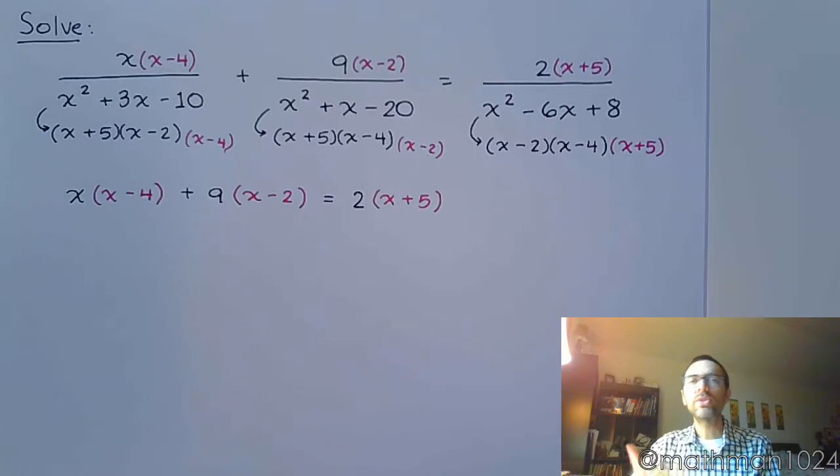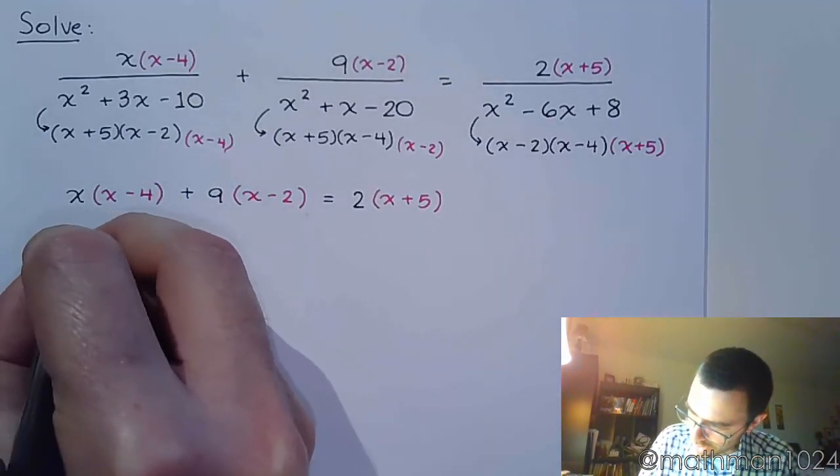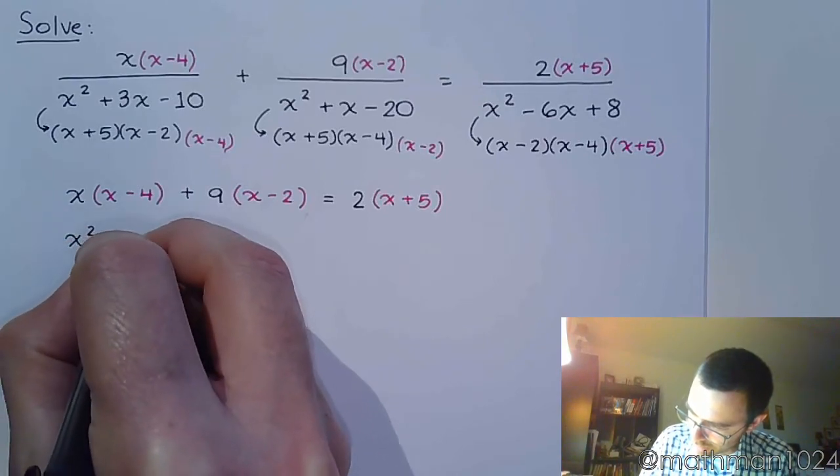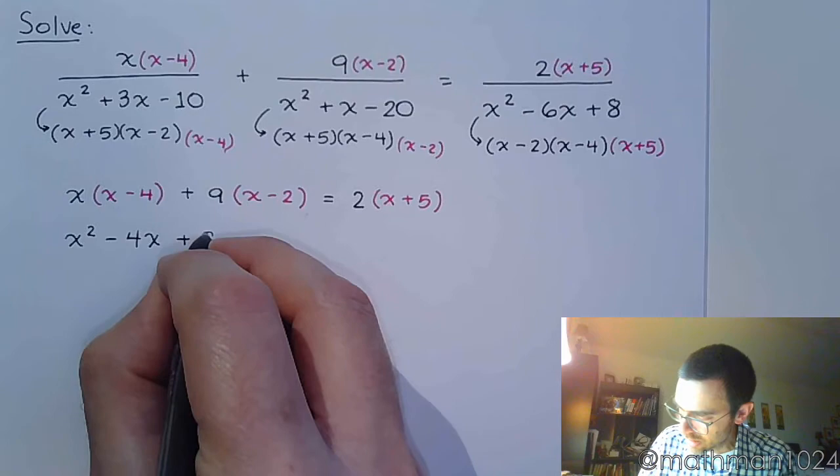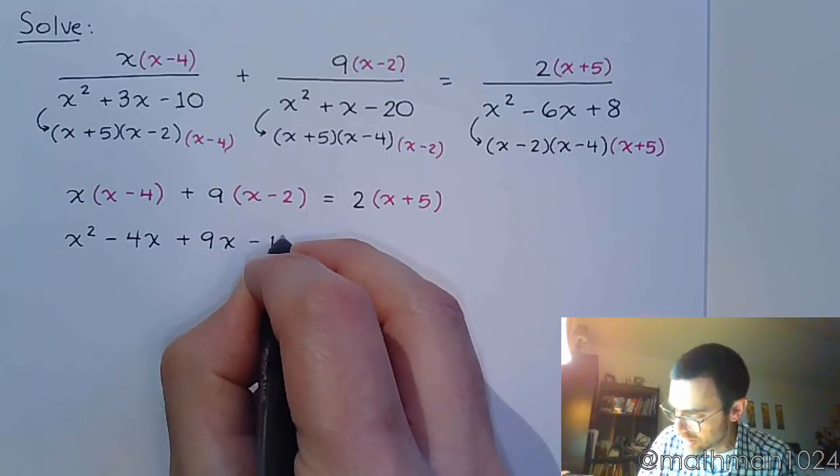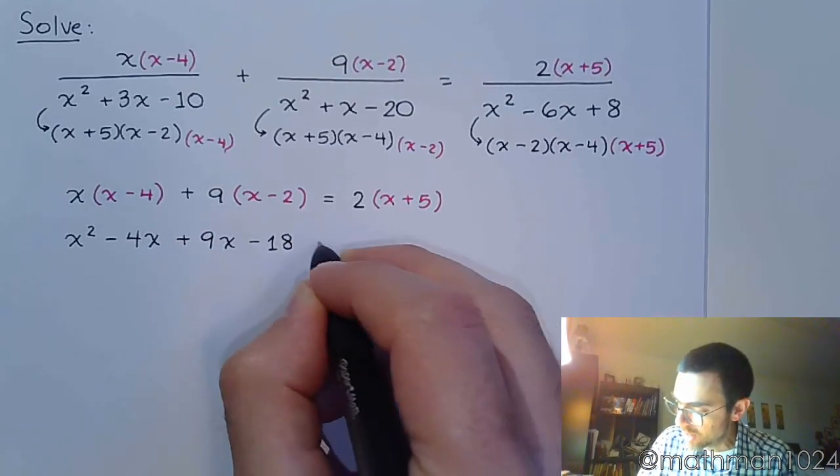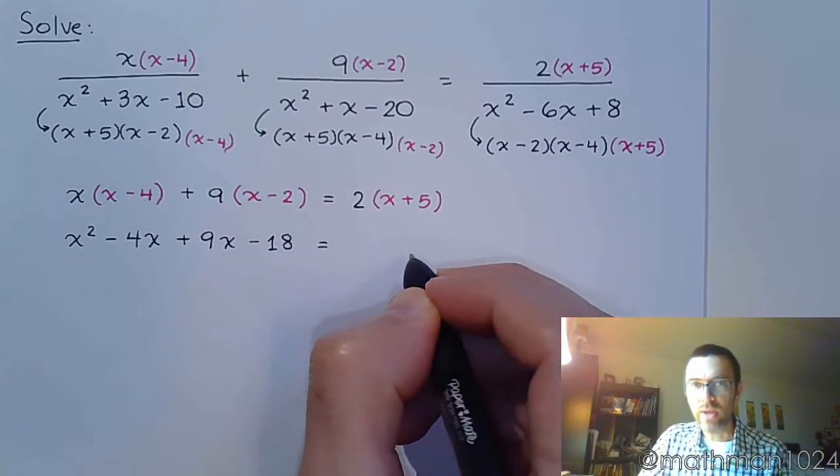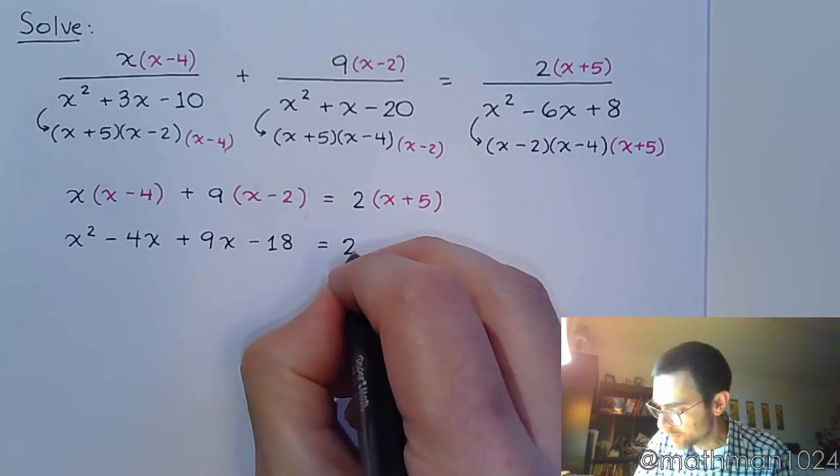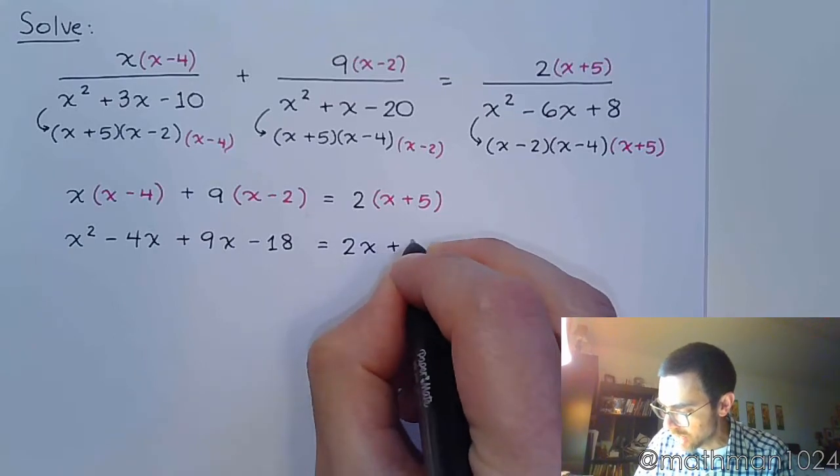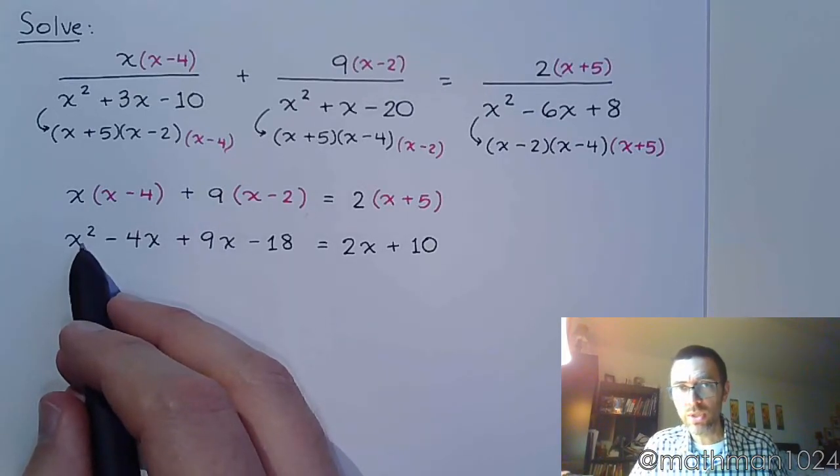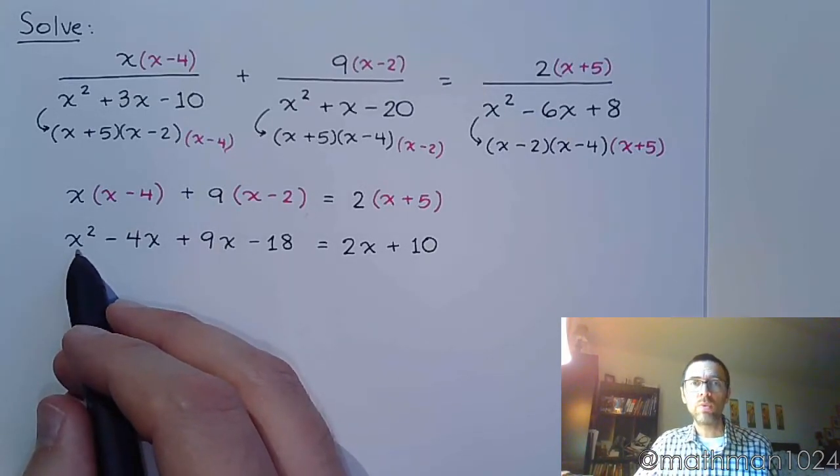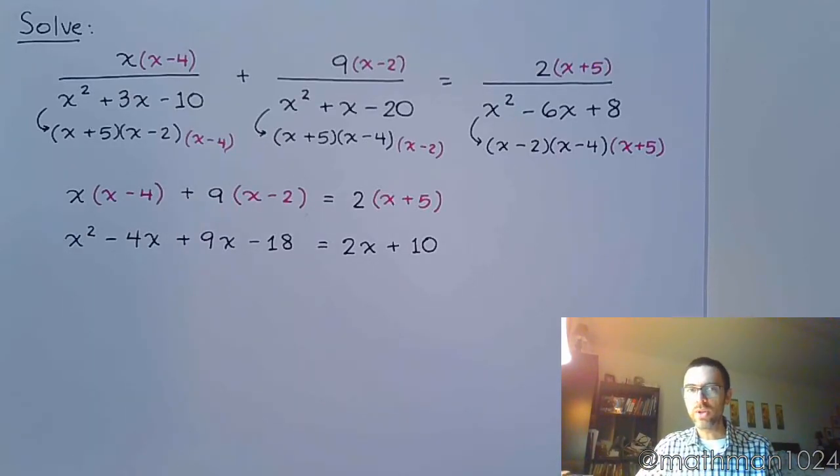And now we just distribute to see what we have. So to distribute here, we have x squared minus 4x, distribute to the 9. So plus 9x minus 18. And on the right side, distribute to the 2. And we have 2x plus 10. Now, I hope that you guys recognize that there's an x squared here, which tells you this is going to be quadratic, which means we should probably go ahead and get everything to the same side of the equation.